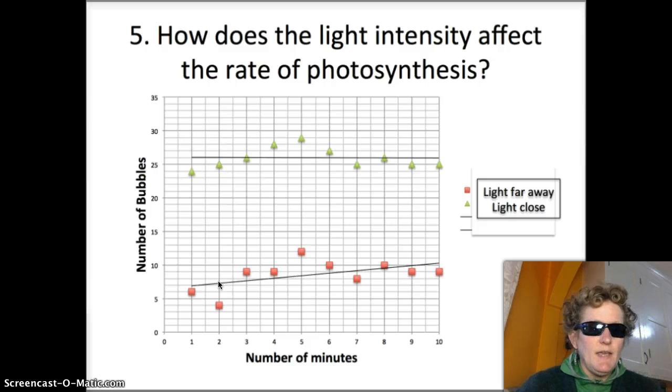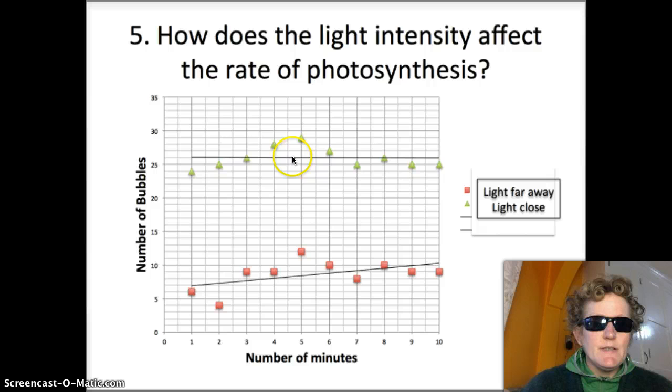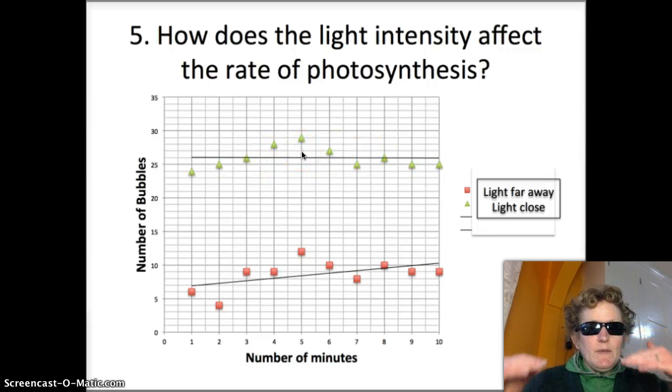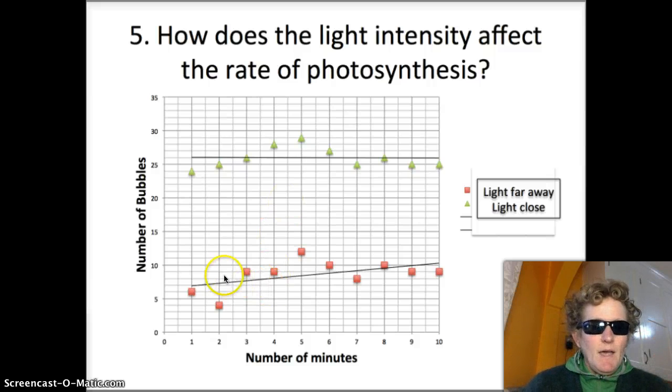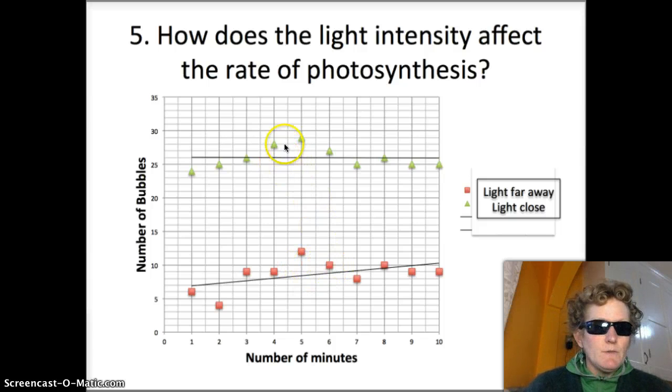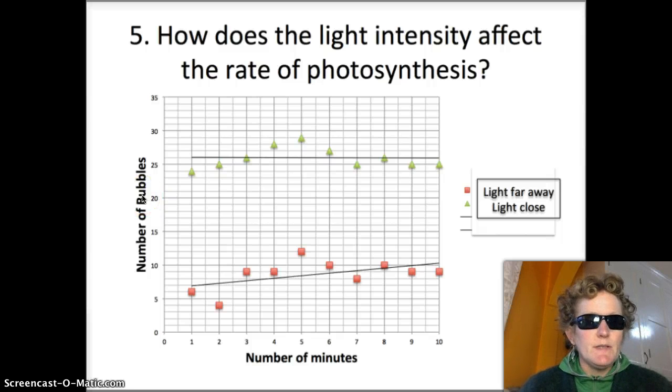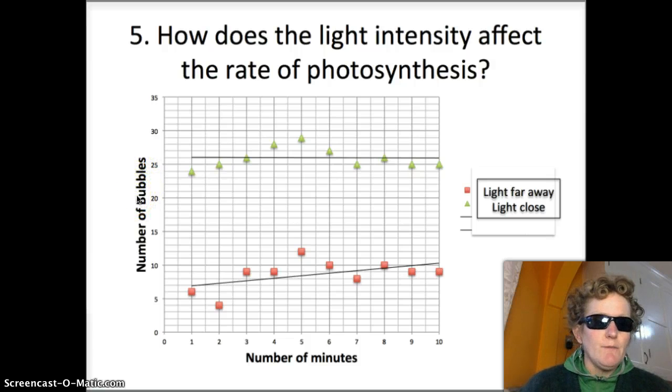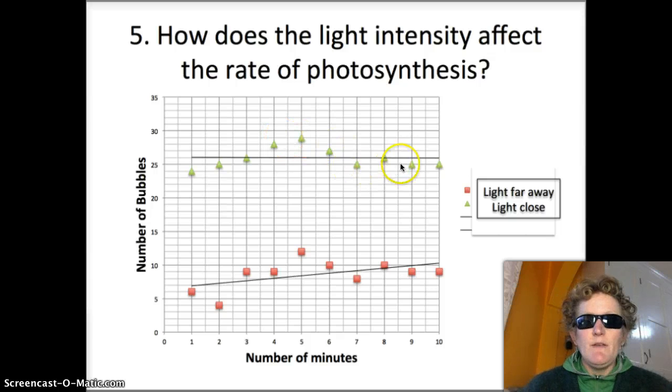I've helped you out because I graphed all of the numbers as well and this line here is a line of best fit. It's kind of where all the points would line up if you sort of took the average of all of them. I put a line of best fit here too. These red squares represent when the light was very far away. Here's when the light was close. We measured in the experiment the number of bubbles being produced by a plant that was underwater, a lot like the plant with just the lettuce that we looked at. The number of bubbles represents the rate of photosynthesis. So if you have more bubbles you're getting more oxygen and photosynthesis is going faster.